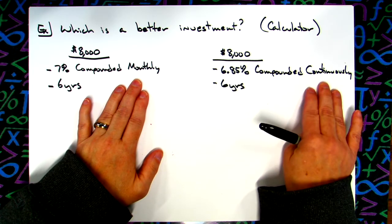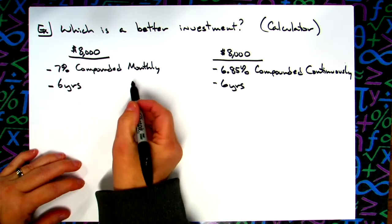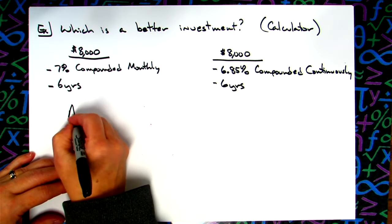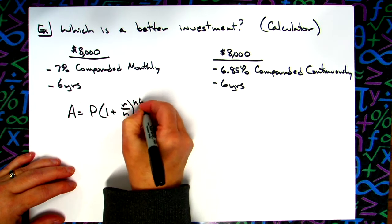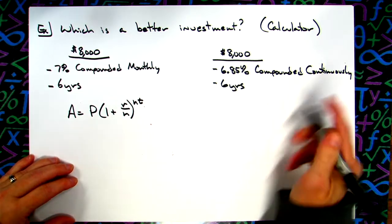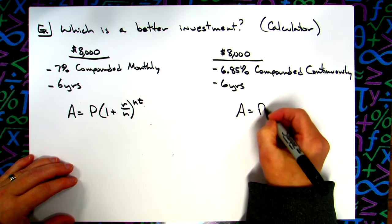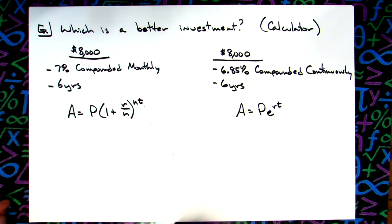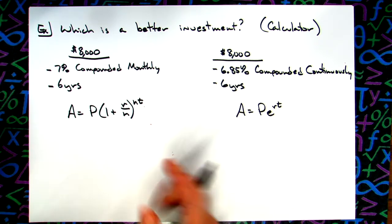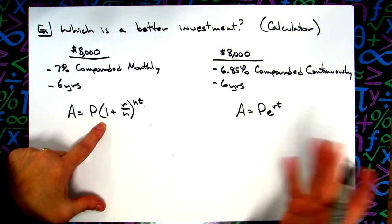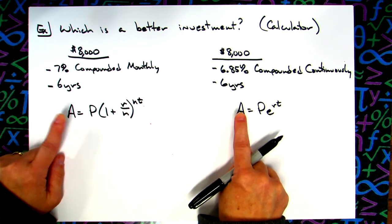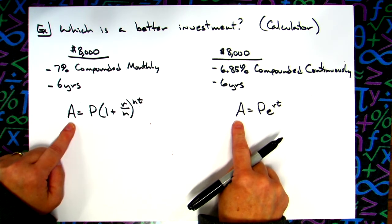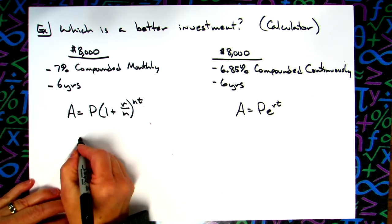If it's compounded monthly I need to use the A equals P(1 + r/n)^(nt). With it being compounded continuously I need to use the A equals Pe^(rt). If we are doing this as a calculator problem, it's a matter of plugging the numbers in the appropriate spot and then seeing what you get. I'm wanting to know which is a better investment, so what's going to be my balance, which one of these two accounts is going to have the higher balance at the end of the six years.